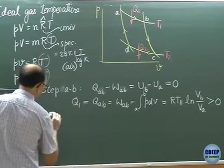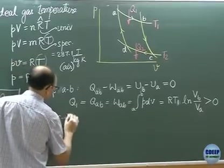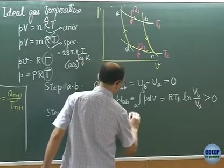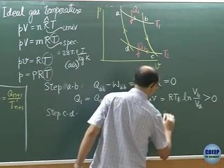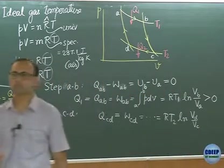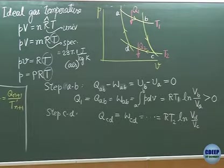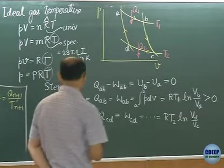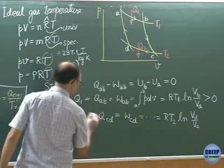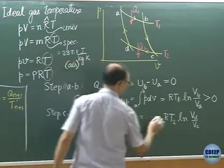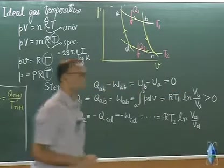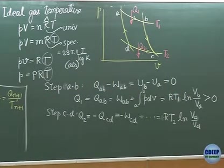And we did the same thing for step cd, the other heat. I am going to write this as Q cd equal to W cd, all this stuff at the end we have R T2 ln vd over vc, and it is negative. If you define Q2 as the magnitude of the heat rejected, then I would say all these quantities are negative, so why don't I put a negative sign and equate it to Q2. And instead of putting a negative sign here, I am going to replace the subscripts vc and vd inside the log, switch them. Agreed?